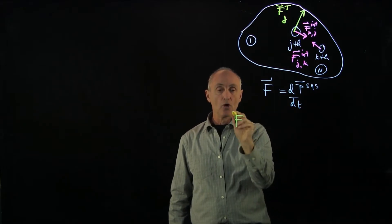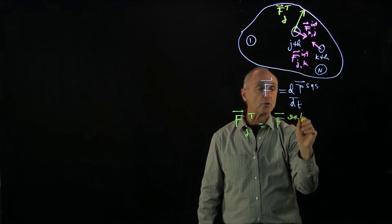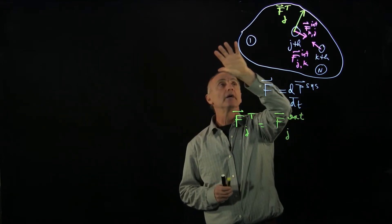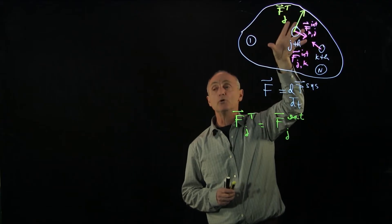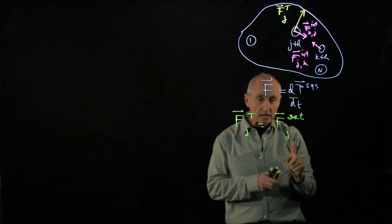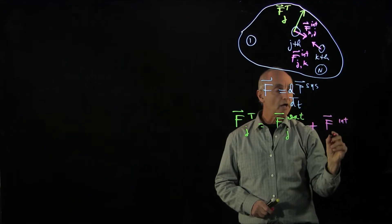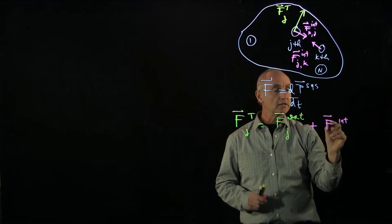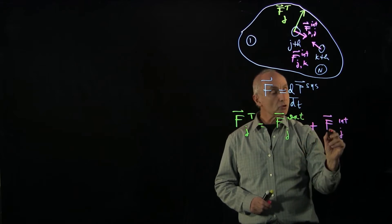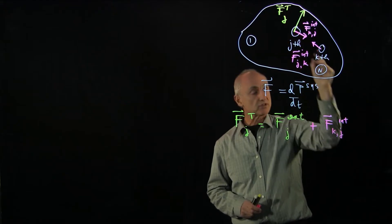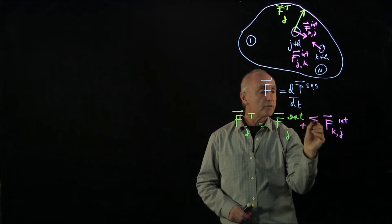We'll do a decomposition: the total force on the j-th particle can come from external forces — for example, if these particles were interacting gravitationally, there could be a planet outside the system, and our system is just the moons, giving an external gravitational force — plus the total internal forces on the j-th particle.